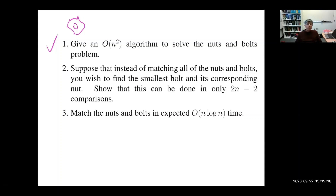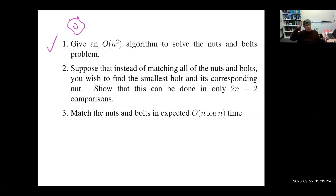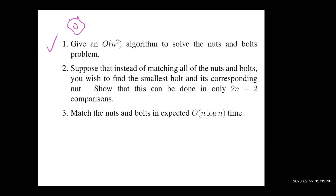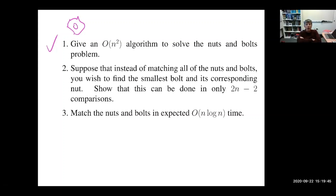What if I want to find just the smallest nut and its matching bolt? How can we identify the smallest nut and its match using only 2n comparisons? You might say scan both lists for the minimum, but I can't compare a nut against a nut — I can only compare nuts against bolts.